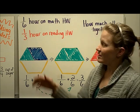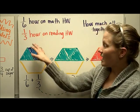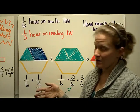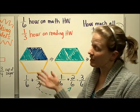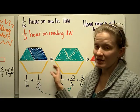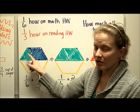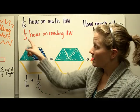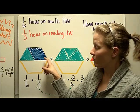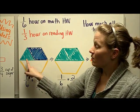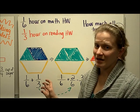If in one evening you spent one-sixth of an hour on your math homework and one-third of an hour on your reading homework, you could model that with the pattern-block hexagon pieces. Remember that the yellow hexagon is one whole; the green triangle is one-sixth of the whole and the blue rhombus is one-third of the whole. So one-sixth plus one-third — we've got to figure out what fraction that is.